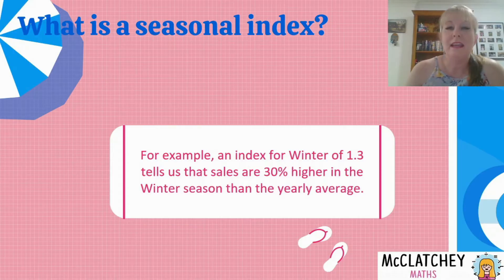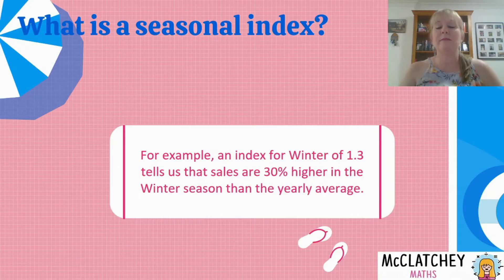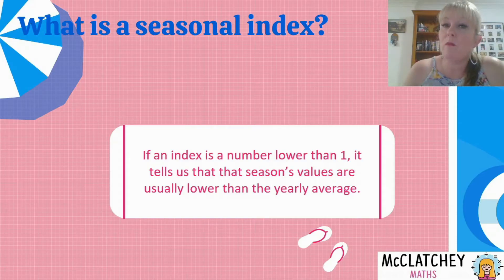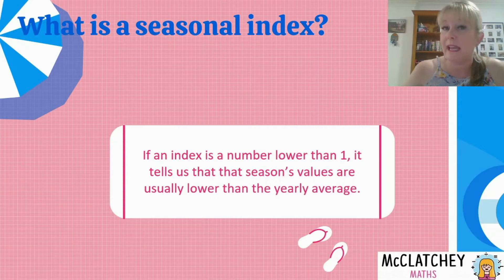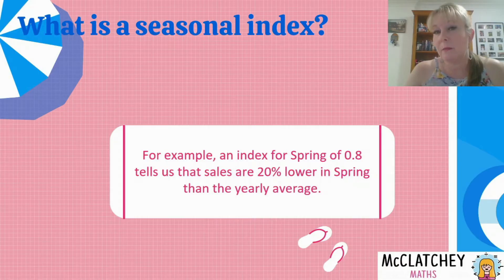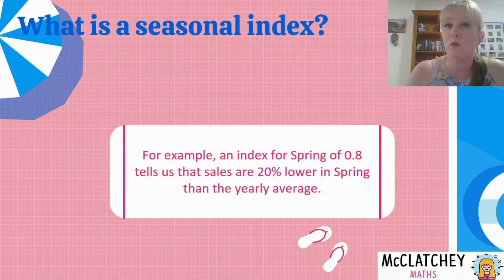So that could be something like sales of jumpers, pullovers, or hoodies. We'd expect them to be a lot higher in winter than in summertime. Conversely, if our index is lower than 1 or 100%, it tells us the season's values are lower than the yearly average. So if I had an index for spring of 0.8, that means sales in spring were 20% lower than my yearly average — I got 20% because 1 minus 0.8 is 0.2.